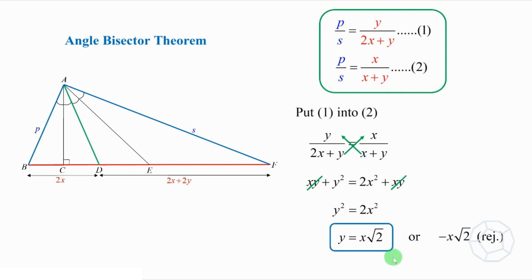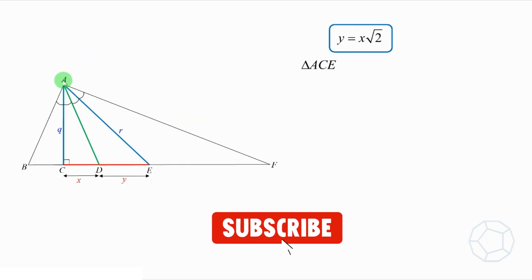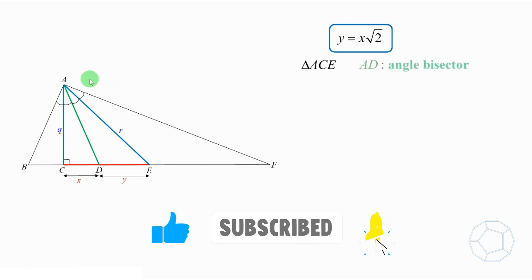We've got a really important relation between the sides. But what about the angles? Let's look at triangle ACE, where AD is the angle bisector. By the theorem again, we get Q over R equals X over Y. Let's put Y equals X times square root 2 into the equation. Then cancel out the X terms. Therefore, Q over R equals 1 over square root 2.